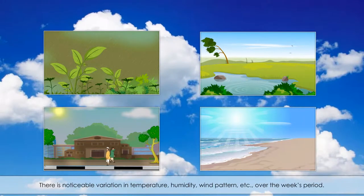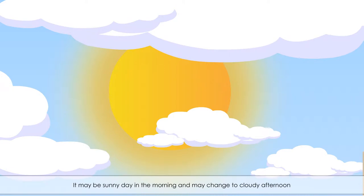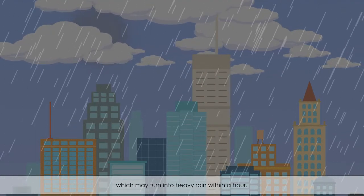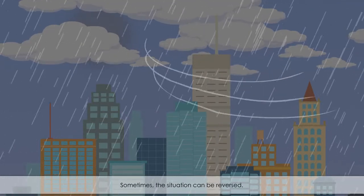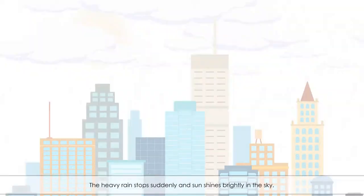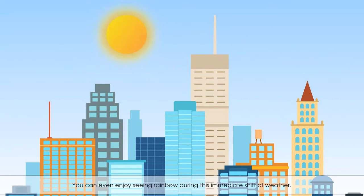There is noticeable variation in temperature, humidity, wind pattern, etc. over the week's period. It may be a sunny day in the morning and may change to a cloudy afternoon, which may turn into heavy rain within an hour. Sometimes the situation can be reversed — the heavy rain stops suddenly and the sun shines brightly in the sky. You can even enjoy seeing a rainbow during this immediate shift of weather.